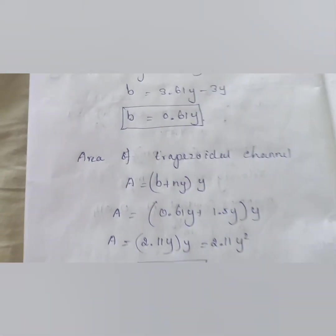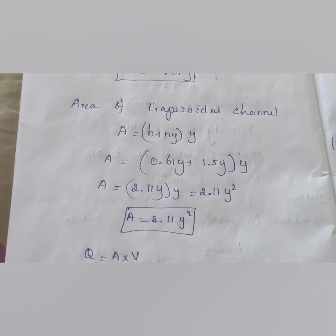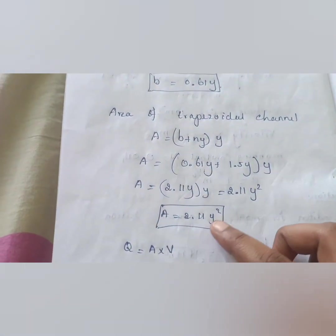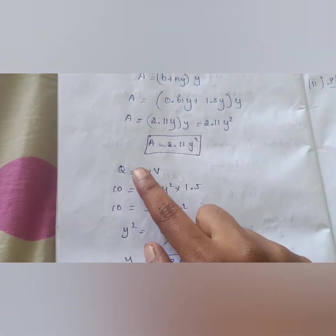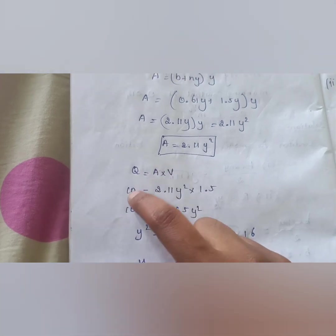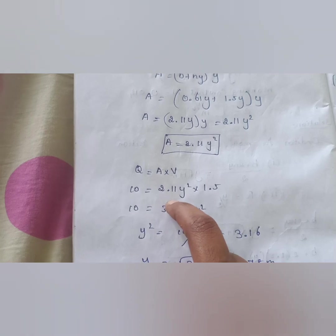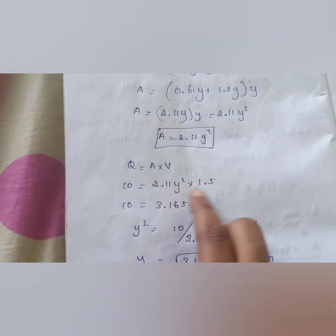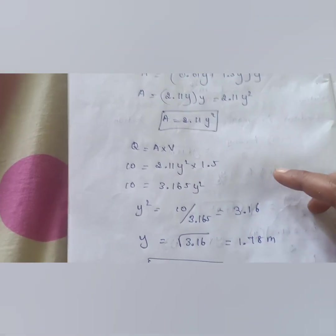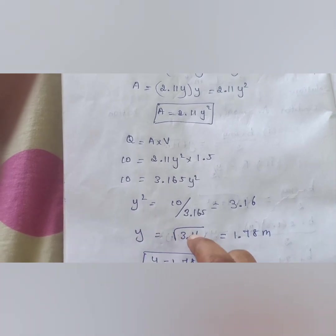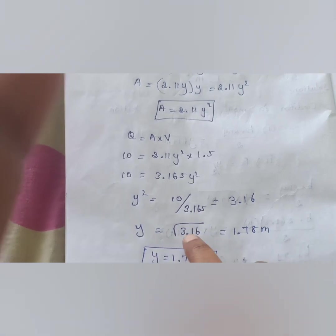The area of the trapezoidal channel section is A = (b + ny) × y. Substituting b = 0.61y, the area becomes A = 2.11y². Now using Q = A × V: 10 = 2.11y² × 1.5, which gives y² = 10 / 3.165. Therefore y = 1.78 m.